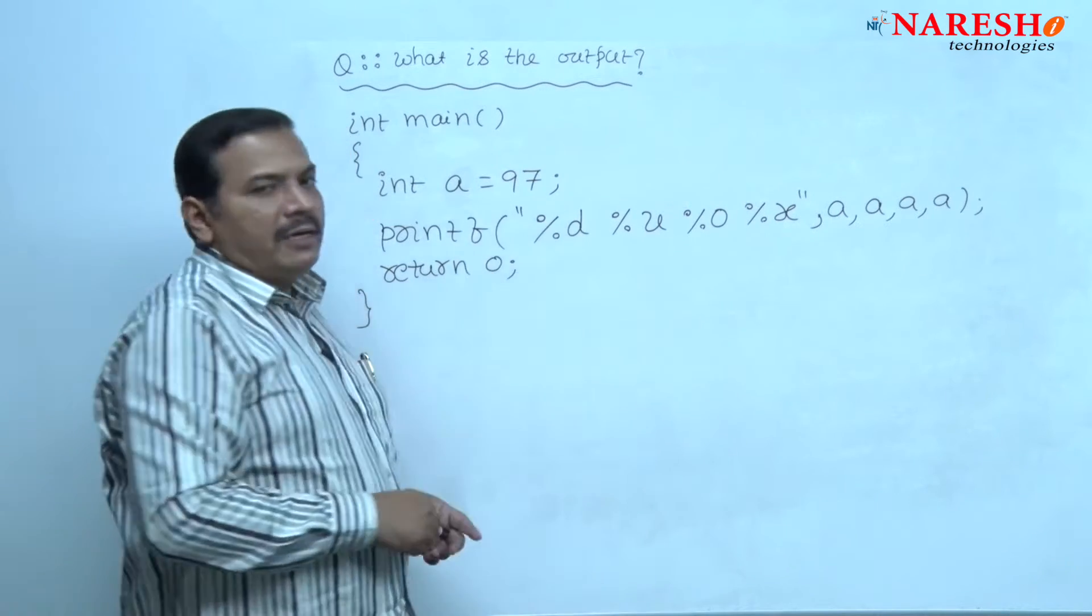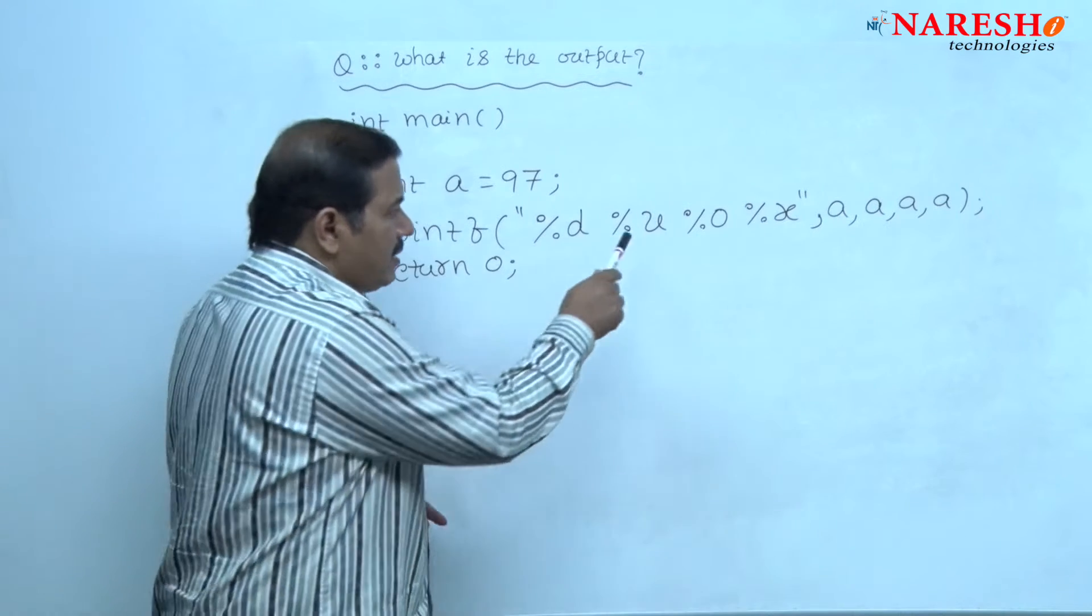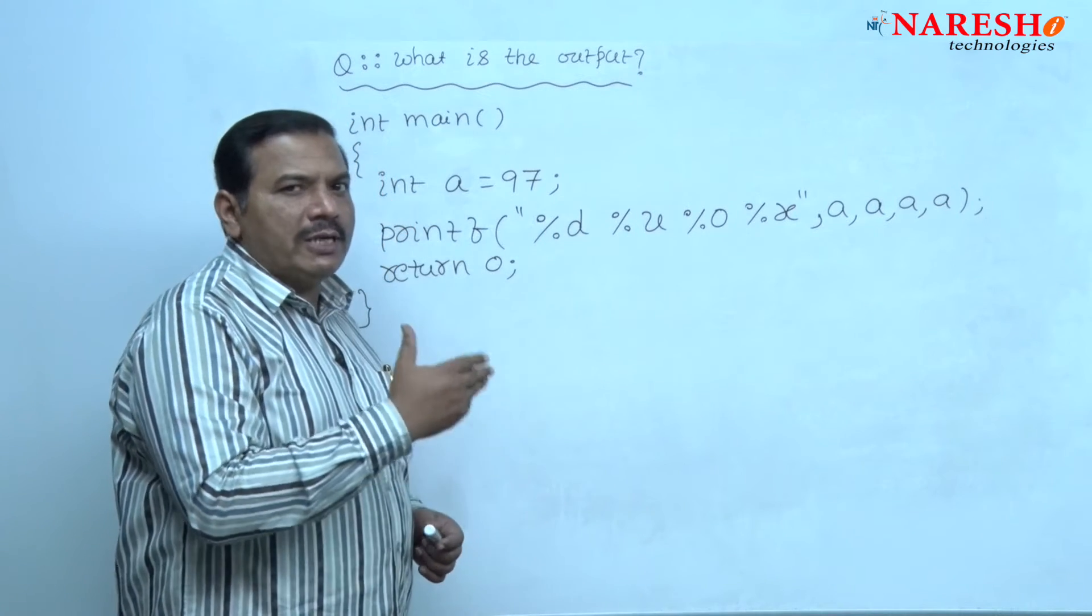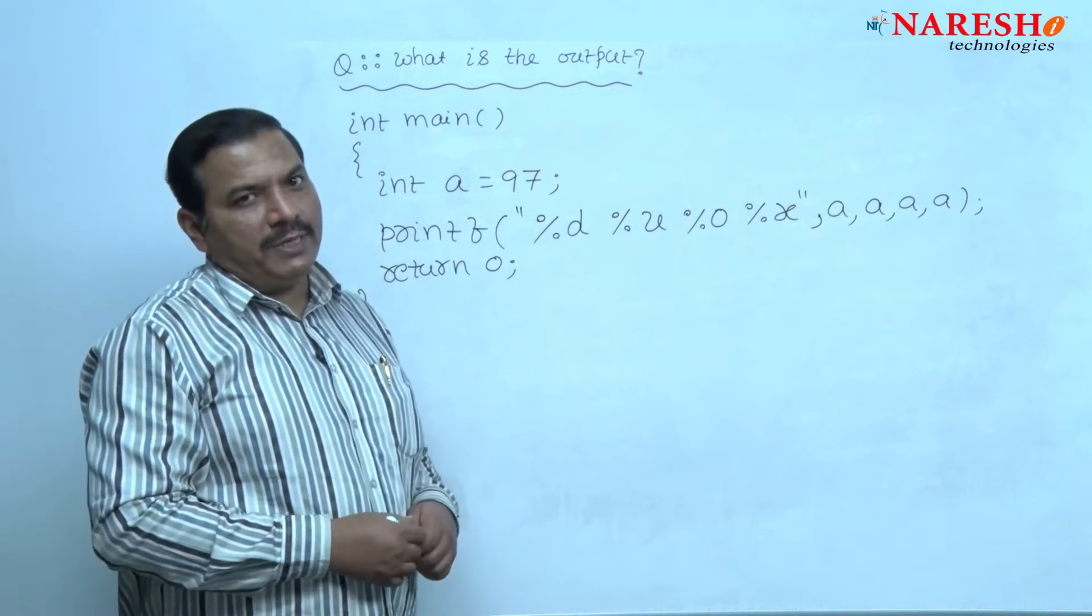That is, it is printing in a decimal integer format, unsigned integer, octal integer, and hexadecimal integer.